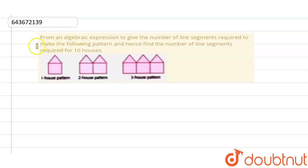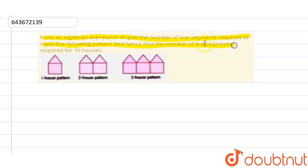The question given to us is to find an algebraic expression to give the number of line segments required to make the following pattern, and hence find the number of line segments required for 10 houses. This is the first house pattern, this is the second house pattern, and this is the third house pattern.